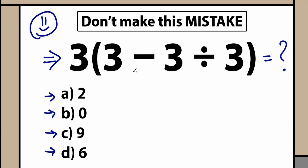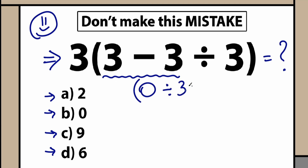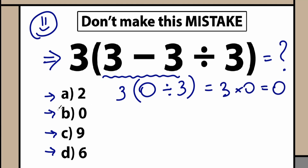For example, just look at this quick example. We have parentheses, so let's start with the subtraction: 3 minus 3 equals 0. The next thing we have is division by 3, so 0 divided by 3 — we have that inside parentheses. Of course we have the 3 in front of it. So 0 divided by 3 equals 0. So we have 3 times 0, which equals 0. This is option B — a lot of students solve this question like that.